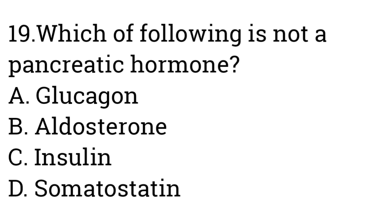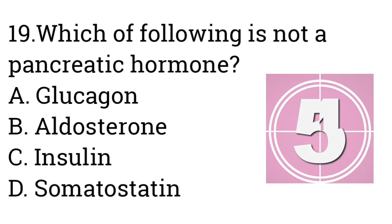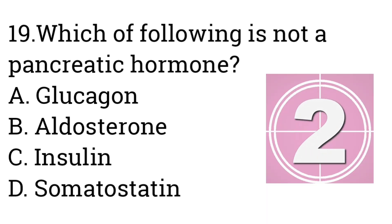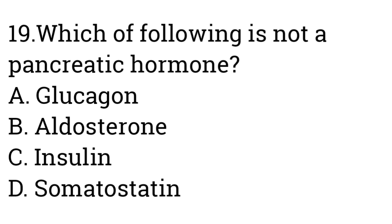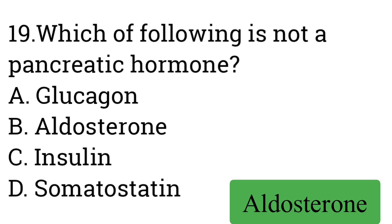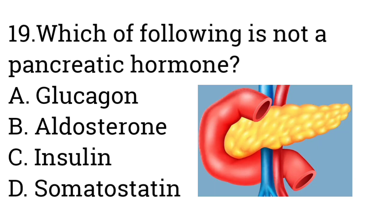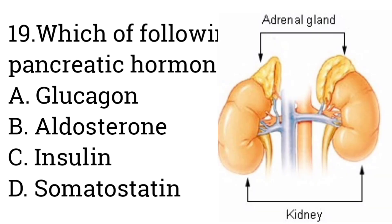Question number nineteen: Which of the following is NOT a pancreatic hormone? Option A: Glucagon, B: Aldosterone, C: Insulin, D: Somatostatin. Answer is Aldosterone. All of the others — glucagon, insulin, and somatostatin — are secreted by the pancreas, whereas aldosterone is the only hormone secreted by the adrenal gland.